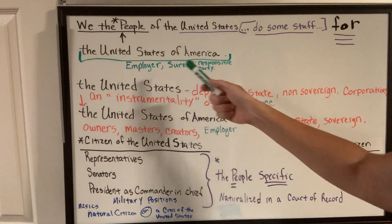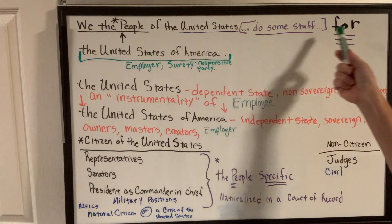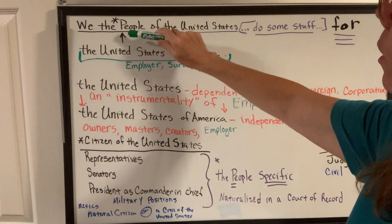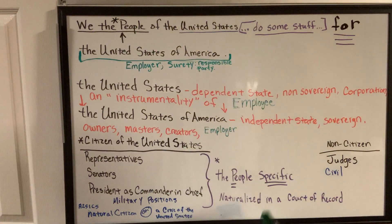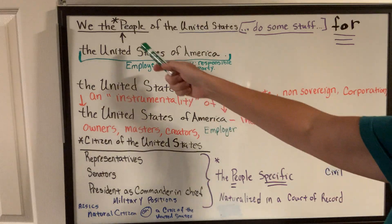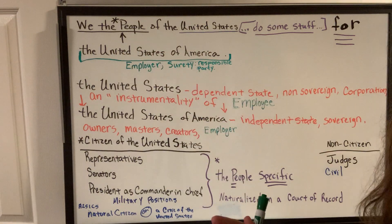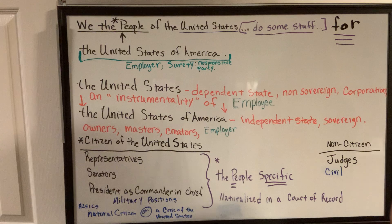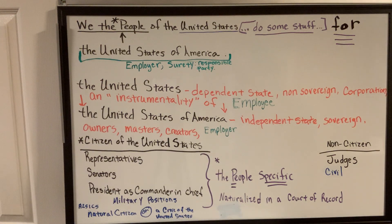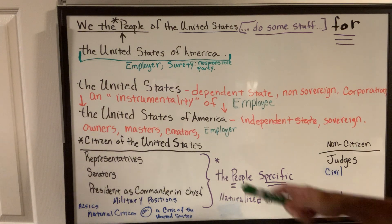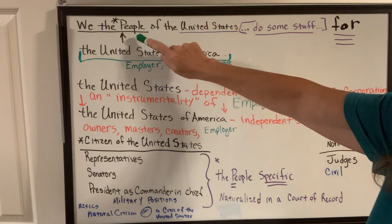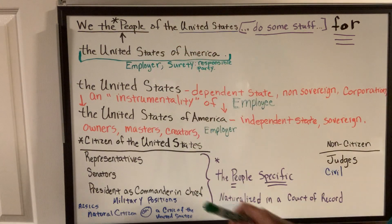We're going to look at this — it's kind of like the preamble. It starts off with 'We the People.' 'People' is a proper noun, meaning it's specific people. It's not people of the whole country. If it were people of the whole country, it would be a lowercase p, meaning in general. That's basic grammar you learn in elementary school — distinguishing between a proper noun and a common noun. This is a proper noun, meaning there are specific people it's talking about.